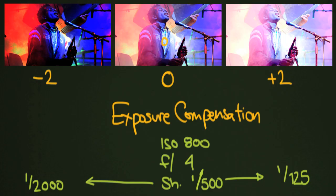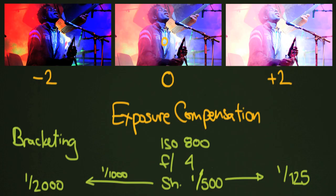That photo at 1/2000th would look something like the darker version shown here — and that is bracketing. You could also do it with one stop: on your way to 1/2000, you could take one at 1/1000th of a second and one at 1/250th, giving you a minus one and a plus one stop bracket.